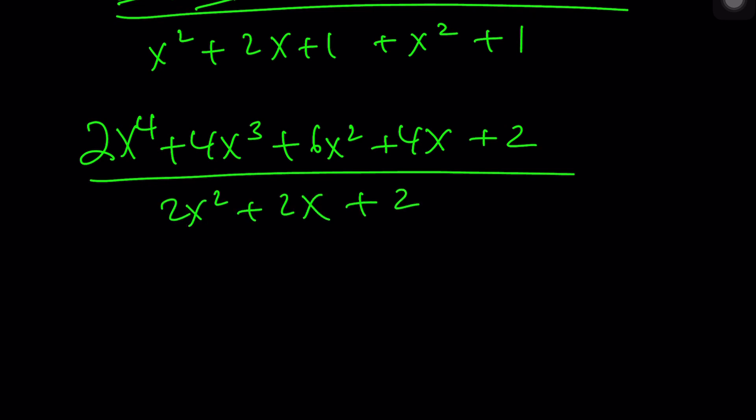Alright, let's go ahead and combine like terms. x to the 4th plus 4x cubed—actually there's 2x to the 4th, so this one and this one—and then I got that one, and then plus 6x squared, and then plus 4x, right, plus 2. And then all of that is divided by 2x squared plus 2x plus 2.